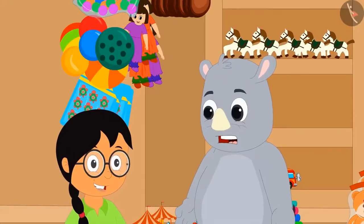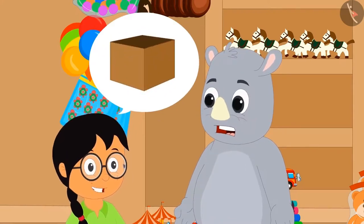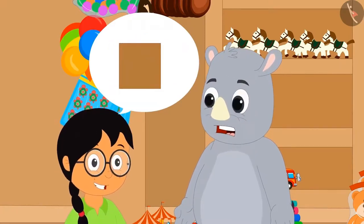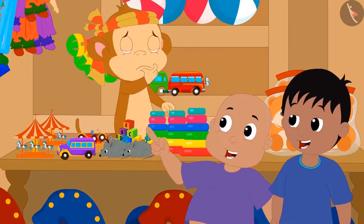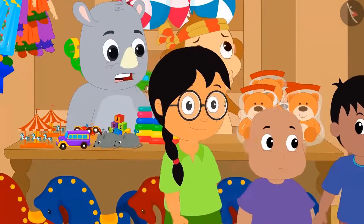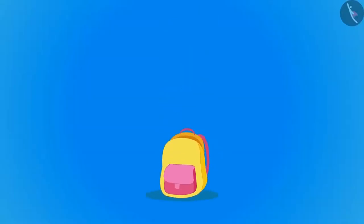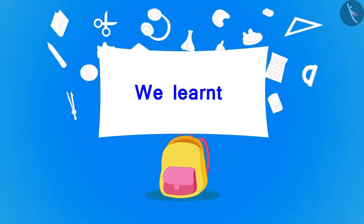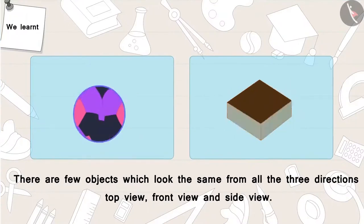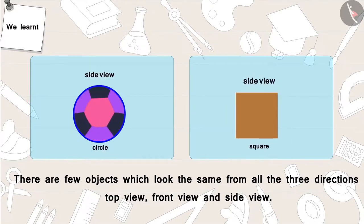There are some objects whose shape from all directions — top view, front view, as well as side view — appears to be the same. Raju and Bablu started cheering happily, and then the three of them went to play together in the park. So children, in this video we learnt that there are a few objects which look the same from all three directions: top view, front view, and side view.